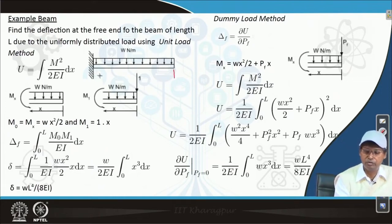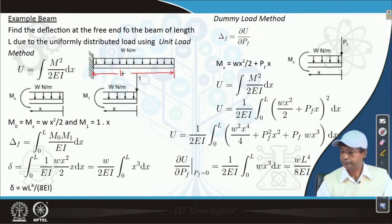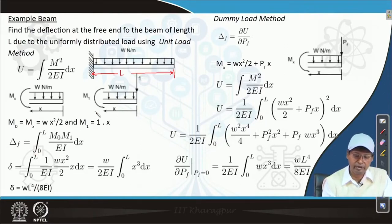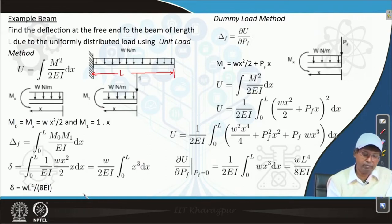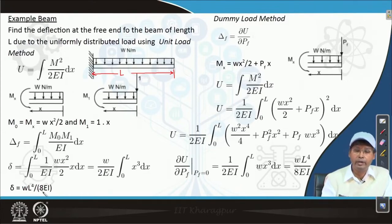The integration is carried from 0 to L, where L is the length of the beam. This gives us w/2EI times the integral of x³ dx from 0 to L, which yields x⁴/4, and the final result for tip deflection is w L⁴ / 8EI. This result follows the unit load method.